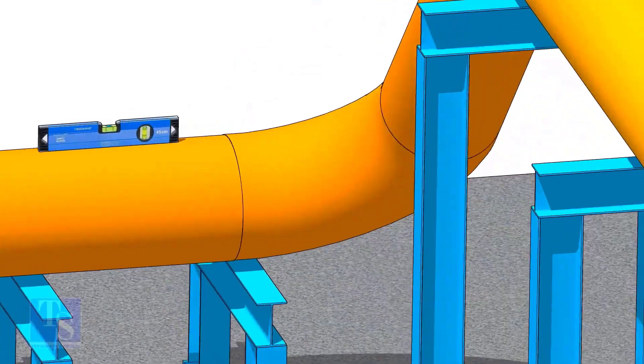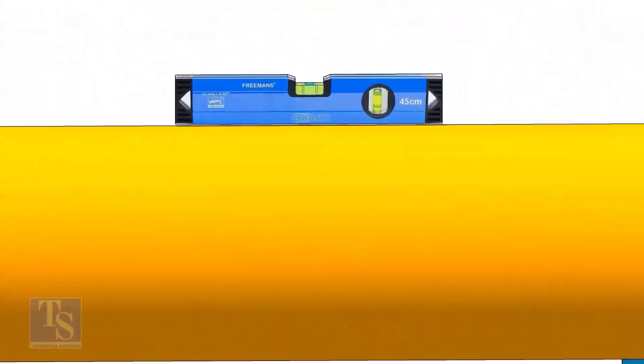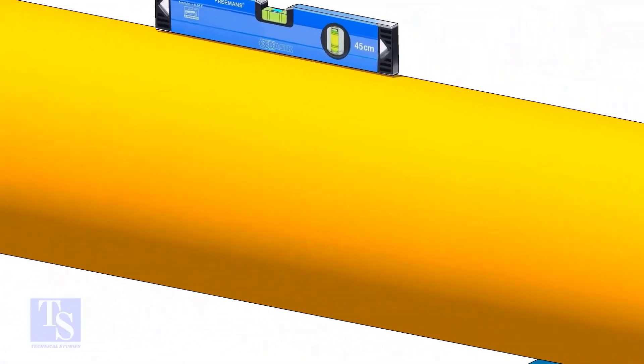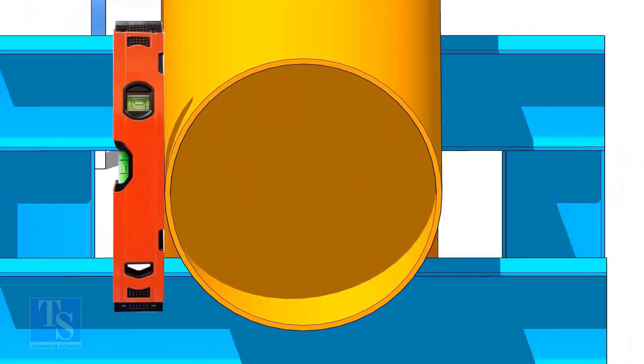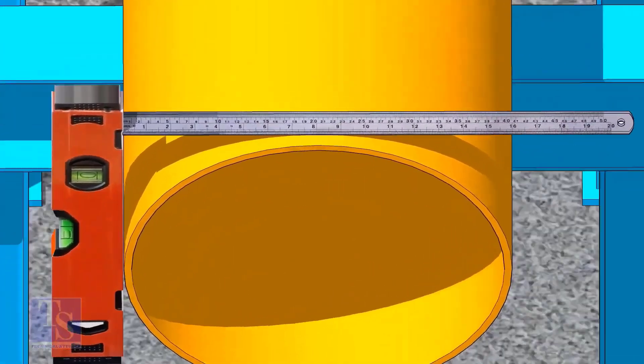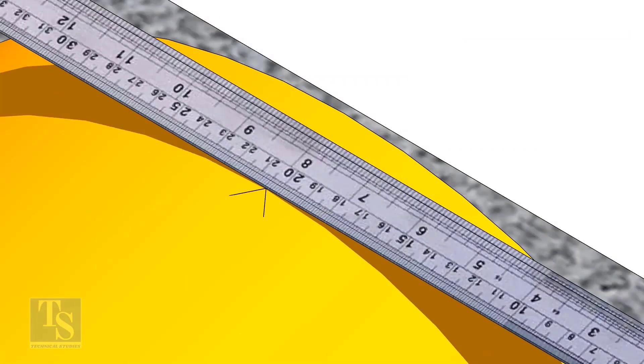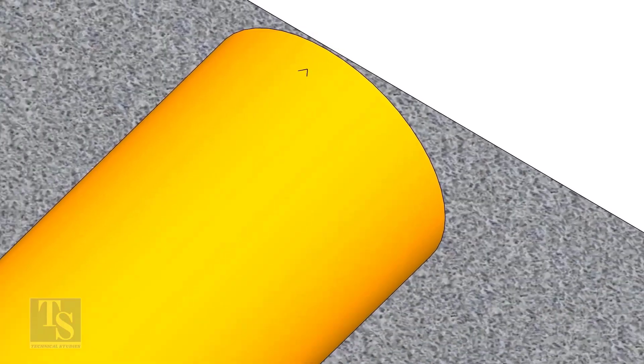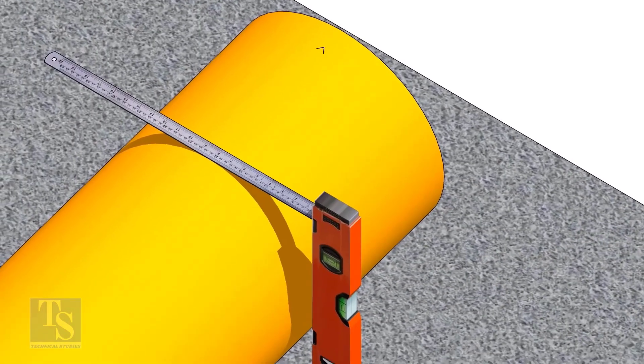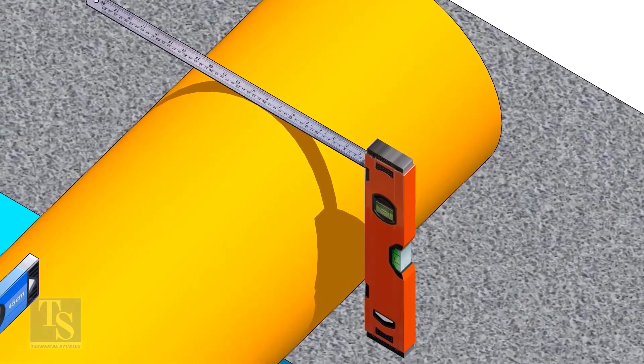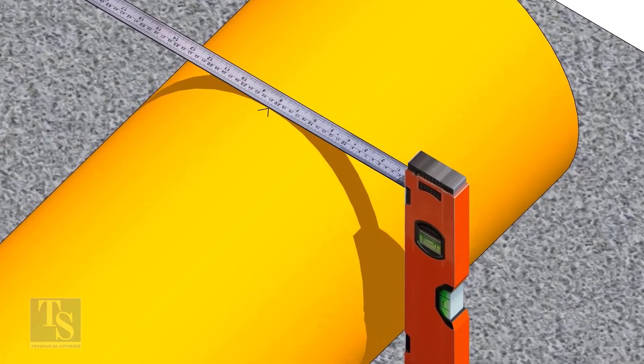Mark the pipe center line and don't forget to punch mark this line. Mark half OD at 300mm apart. This pipe OD is 406mm so mark 203mm from the vertical level bottle on the top of the pipe and draw a line connecting these marks.